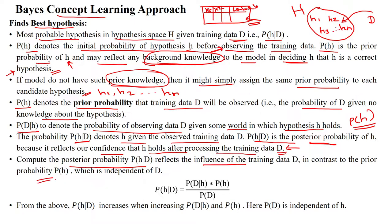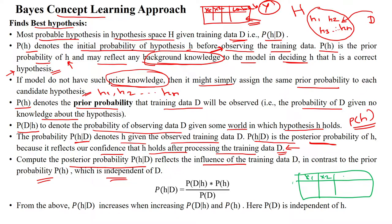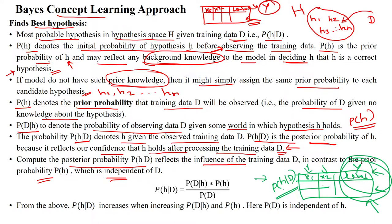In contrast to the prior probability, which is independent of the features of D — the label Y is already given in the dataset, so that is called prior probability — when you take the dataset D, you get features X1 and X2 and the label Y. From Y, you can calculate the prior probability. From the features X1 and X2, you can calculate the probability of H given D. The prior probability is independent of the given dataset features; the posterior probability only depends on the features.